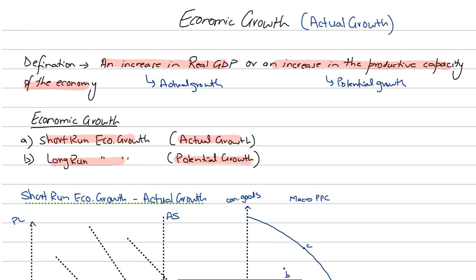Policymakers are specifically very interested in these statistics because the government can enact and inform economic policy accordingly. For example, if real GDP is very low, the government can use expansionary demand-side policies. On the other hand, if the economy is moving towards a boom and the inflation rate is very high and real GDP is excessively rising beyond sustainable levels, then policymakers could come up with contractionary demand-side policies.